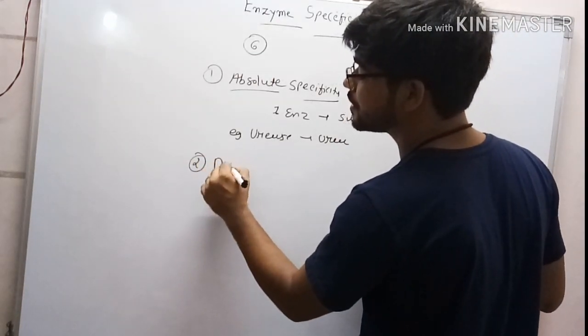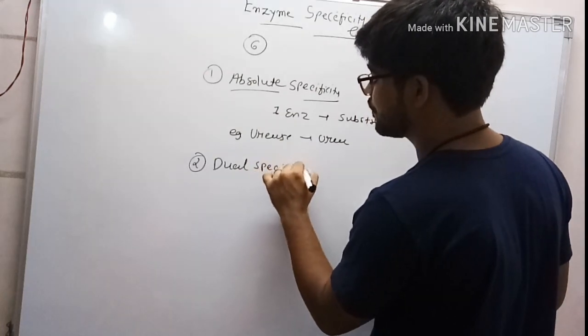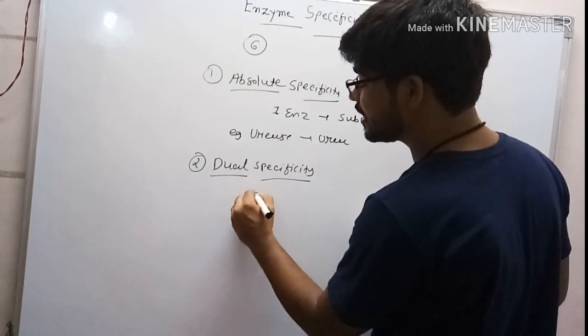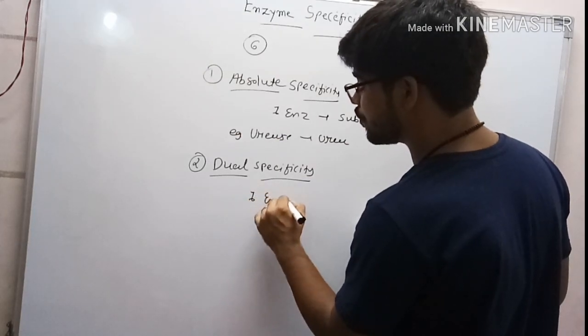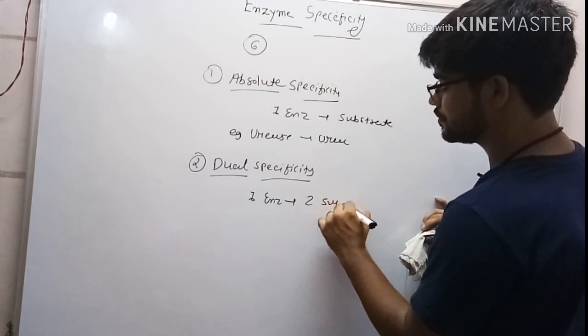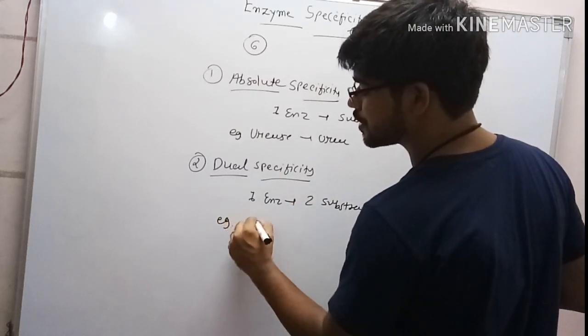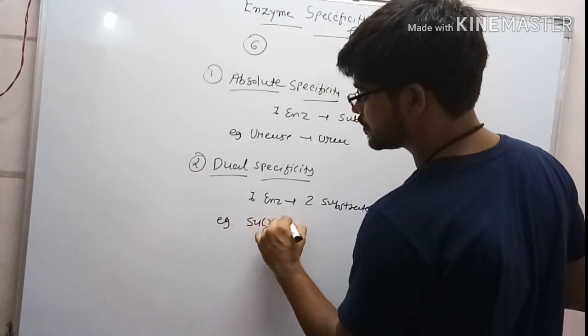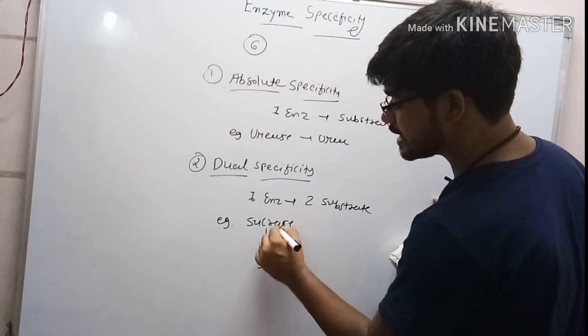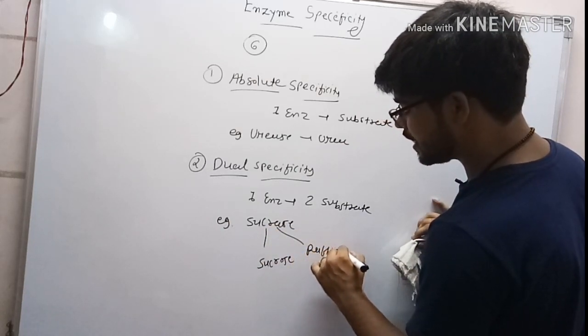The second is dual specificity. As the name suggests, one type of enzyme can work on two different types of substrate. The best example is sucrase, which works on sucrose as well as raffinose. They are disaccharides that convert into two separate monomers of monosaccharides.